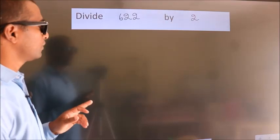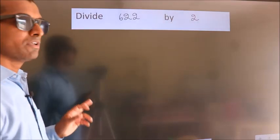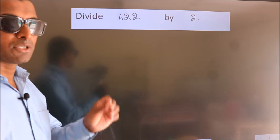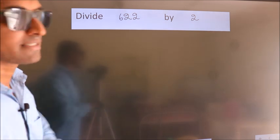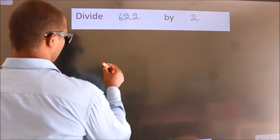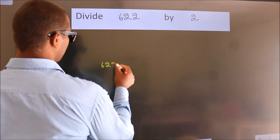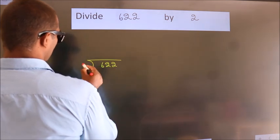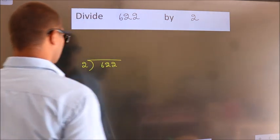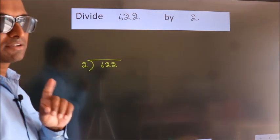Divide 622 by 2. To do this division, we should frame it in this way. 622 here, 2 here. This is your step 1.